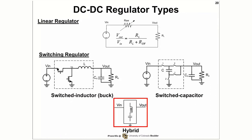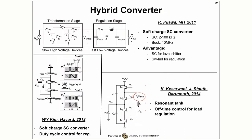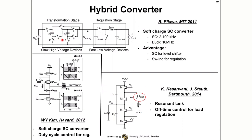That brings up the benefit of the hybrid converter, where the strengths of the switch-inductor converter and switch-capacitor converter are combined into a hybrid that uses both inductor and capacitor together in the topology. The strength of the inductor is fine regulation, and the strength of the switch capacitor is voltage leveling or higher conversion ratio. As shown here, there are three works from MIT, Harvard, and Dartmouth College all trying to exploit the benefits of both. In the work from MIT by Robert Pilawa in 2011, the first transformation stage — formed by a switch capacitor — worked at a low frequency. The input of the regulation stage forms a current sink at the output of the transformation stage, which creates soft charging and discharging for the switch capacitor circuit, reducing loss.